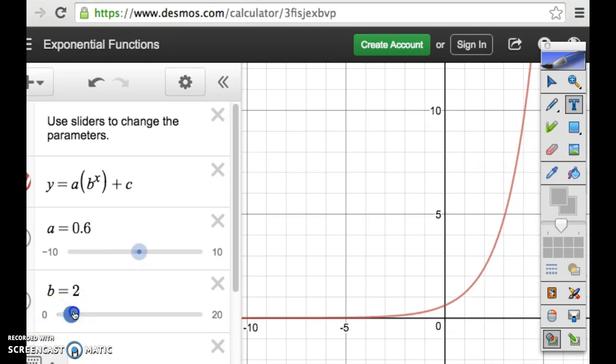What happens when we change the b? It gets real steep. It starts to come up. So in this case, is my b moving us left and right? No. In this case, my b is not moving us left and right. What if I make it a decimal? It goes all the way. It goes down instead of going up. That's something we're going to look at when we're working with exponentials. If this is a decimal, it's going to be going down.